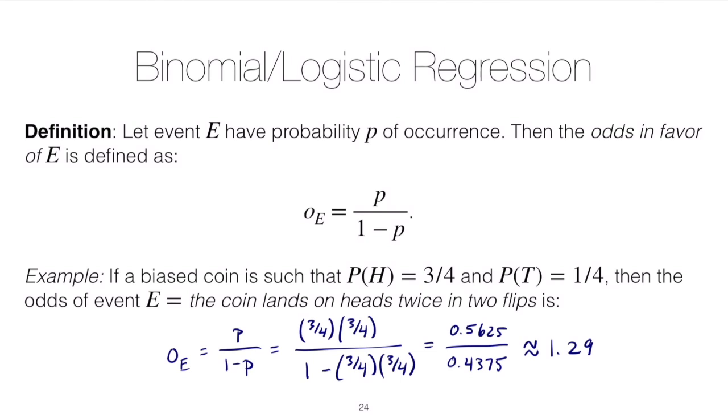That tells us that the odds are in favor of event E, and the higher the odds, the more in favor we would be of event E.